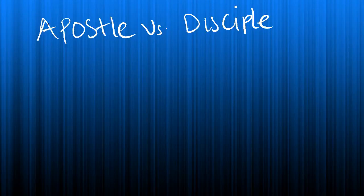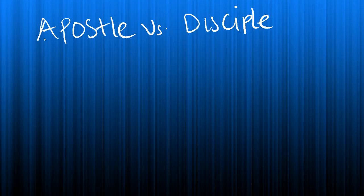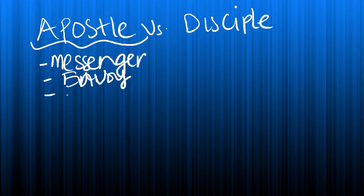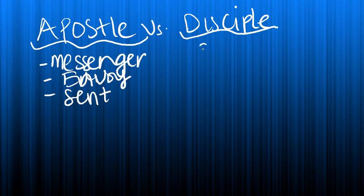Hi, this is Ken Atcher. I'm doing a quick video to answer a question: what is the difference between an apostle and a disciple? The difference is easy. An apostle is an envoy, someone who is sent by another person. A disciple is a student, a follower.